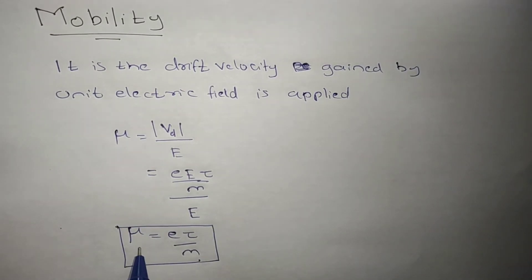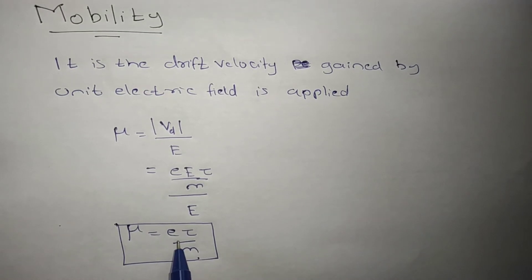If we will consider about the mobility of the electron, m is to be the mass of the electron, and e is the charge of the electron.